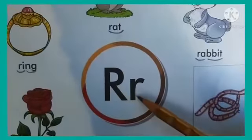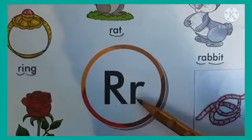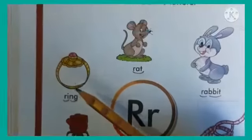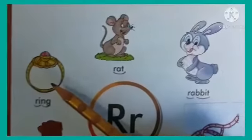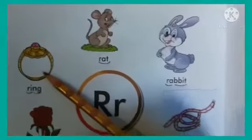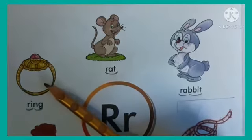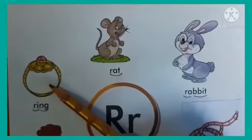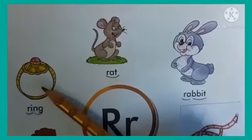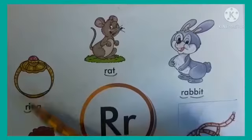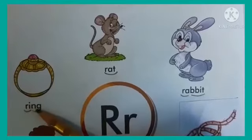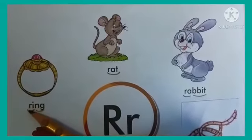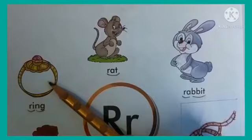This is capital R and this is small r. Chaliye, yeh kya hai? Yeh toh aap sabhi pehchante hain. What is this? This is a ring. Yeh ek angoothi hai. Aapne mummy papa ke haath mein dekha hoga. R for ring — first letter R hai.